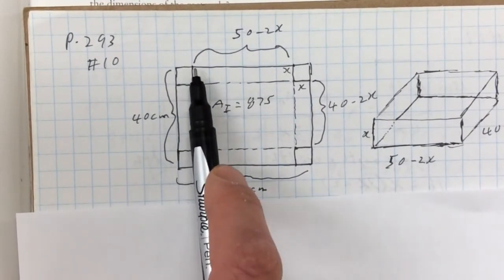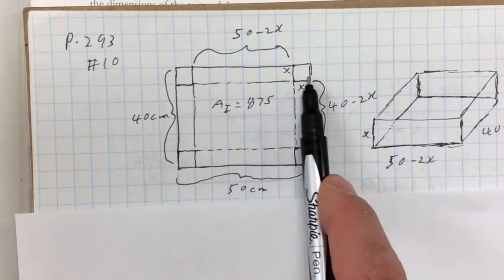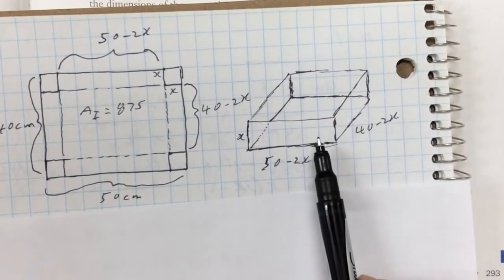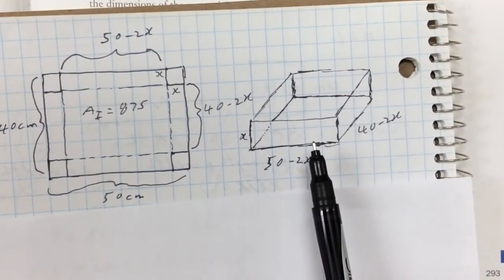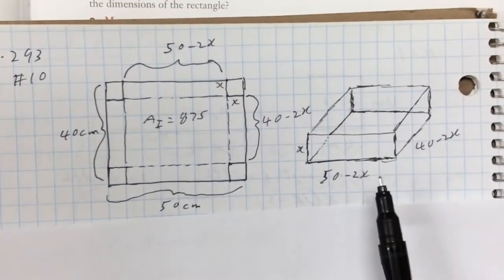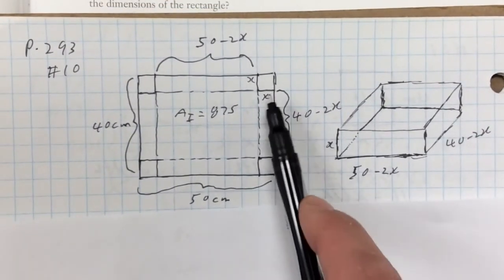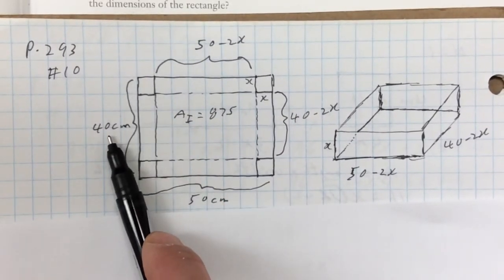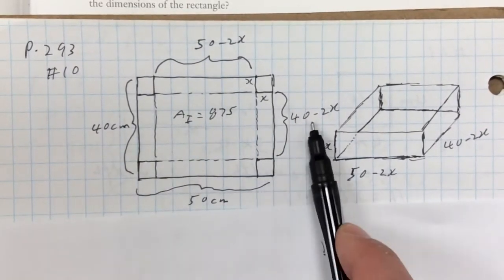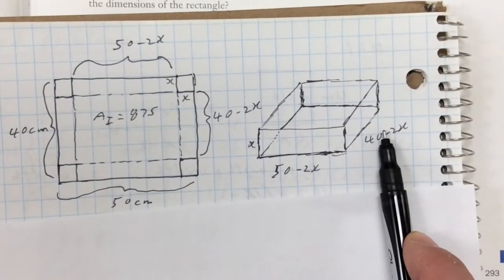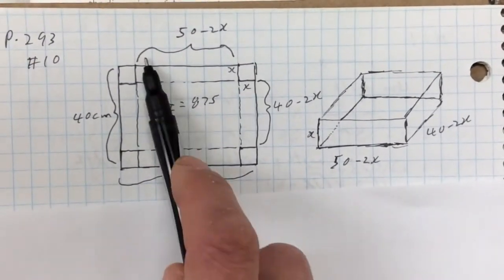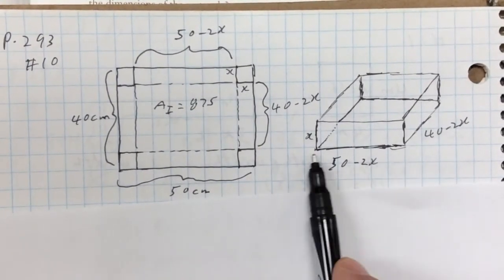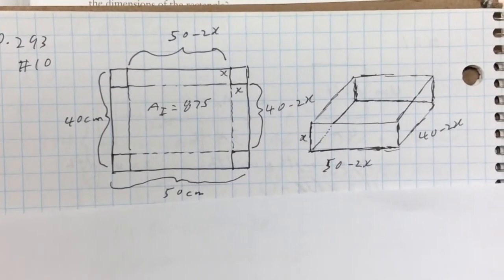If you cut equal squares out of the corners, you can fold the edges up along the dotted lines and end up with an open-top, or lidless, box. Once we've removed X from both sides, this side becomes 40 minus 2X. The base of the box becomes 50 minus 2X. The height of the box is X when folded up.